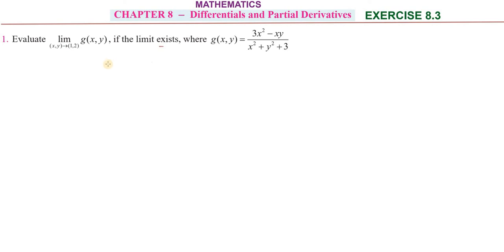We'll substitute x equals 1, y equals 2. So first, g(x,y) equals (3x² - xy)/(x² + y² + 3).